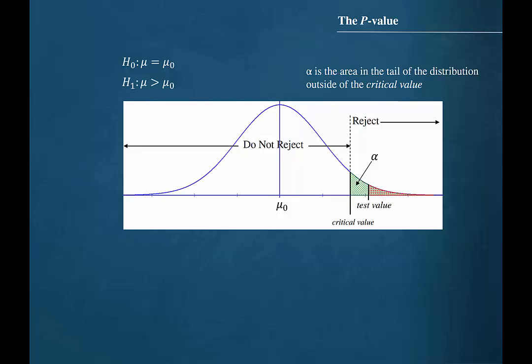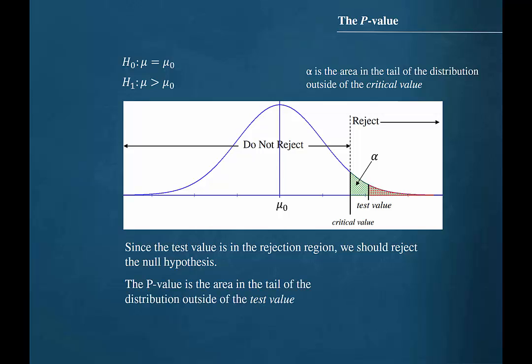First, let's look at the case where the test value lands in the rejection region. Since the test value is in the rejection region, we should reject the null hypothesis. The p-value is the area in the tail of the distribution outside of the test value — the area under the curve shaded in red. Note that this area shaded in red is smaller than the area shaded in green, so therefore the p-value is less than alpha.